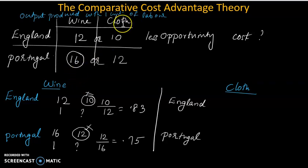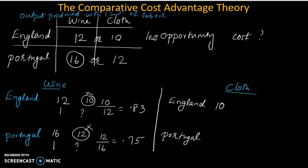Now let's look at cloth production. Cloth has less opportunity cost in England. In England, the opportunity cost of cloth is 12 divided by 10, which equals 1.2.